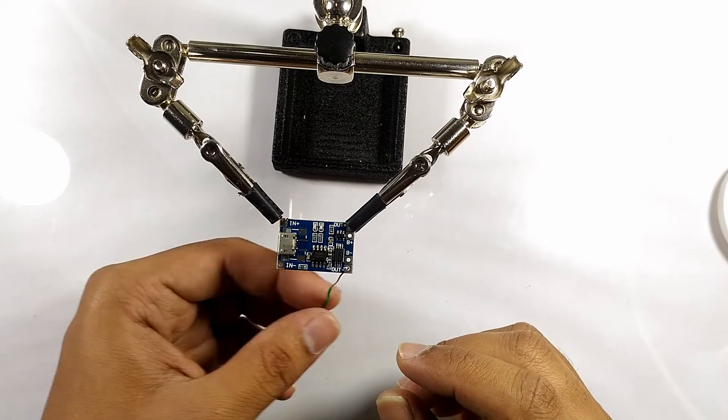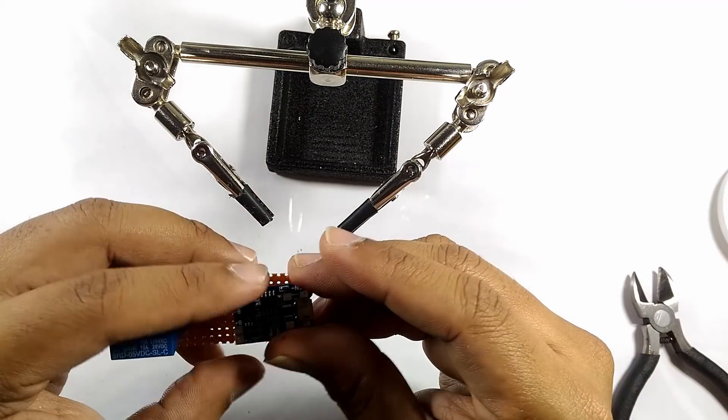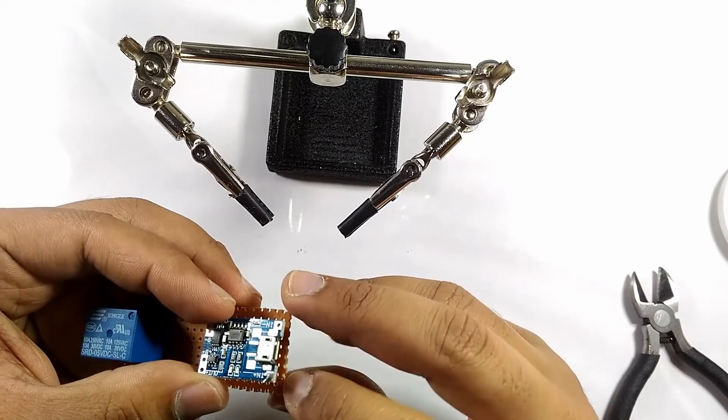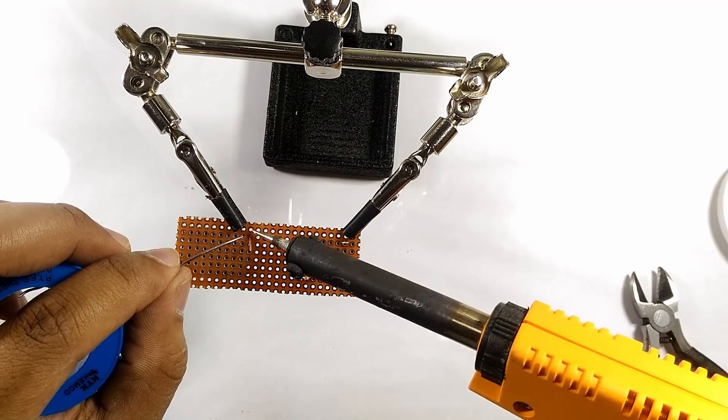I will connect the charge controller to the dot board with copper wire which makes a conductive connection while holding the controller to the board in place. There are 6 contacts in the charge controller all of which should be connected to the dot board.